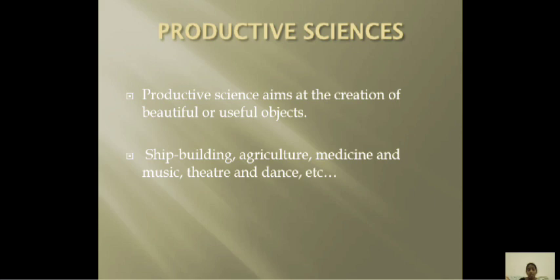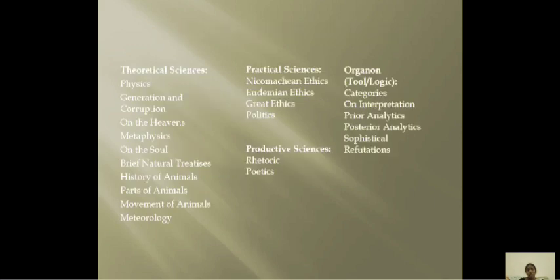If you go for these three kinds, they have some characterizations. Theoretical science includes physics, generation and corruption, on the heavens, metaphysics, and on the soul. Practical science has Nicomachean Ethics, Eudemian Ethics, Great Ethics, and Politics.